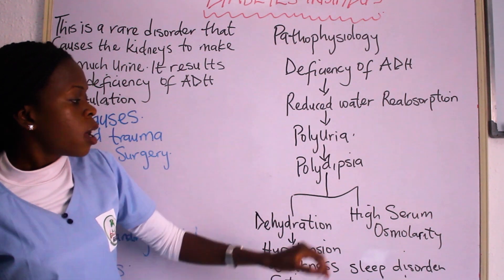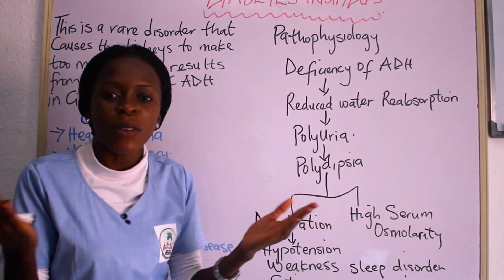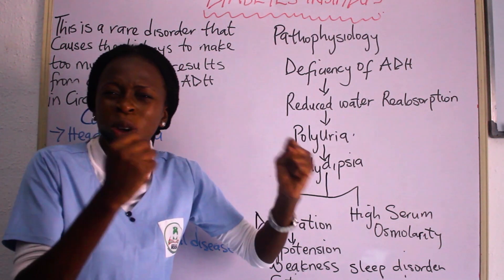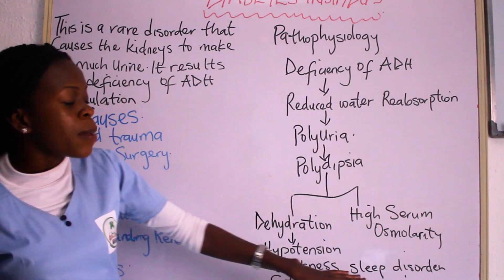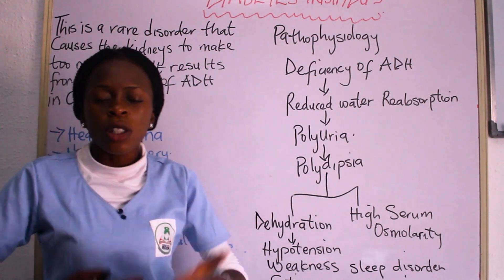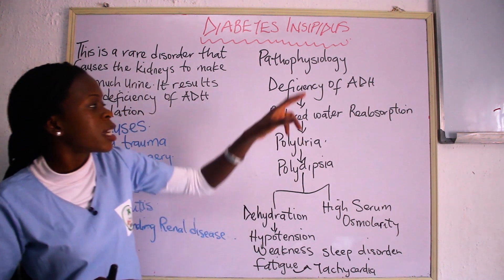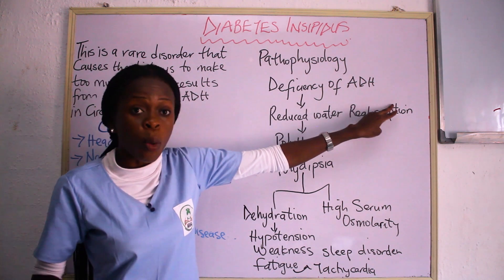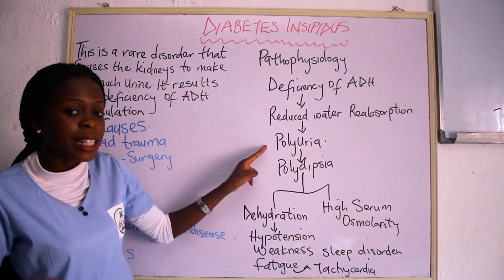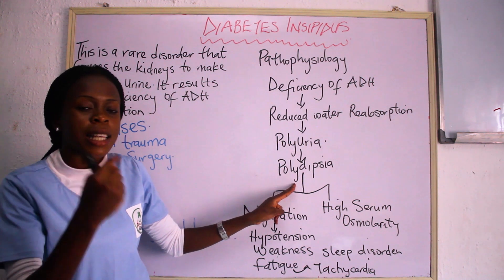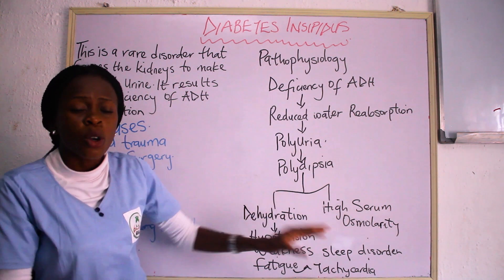Polydipsia will lead to high serum osmolarity — the serum will be concentrated rather than the normal range. Sleep disorder can result from polyuria because this person will be going to the toilet frequently to pass out urine. To summarize: in diabetes insipidus there is deficiency of anti-diuretic hormone, which leads to reduced water reabsorption, leading to polyuria — excessive urine output — and polydipsia — excessive thirst — all of which produce the signs and symptoms of diabetes insipidus.